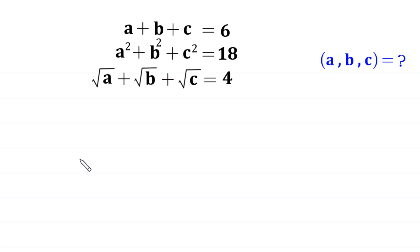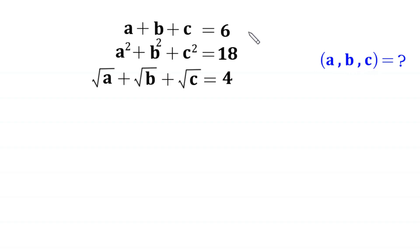Hello everyone. Welcome to solving this very nice system of equations: a plus b plus c is equal to 6, a squared plus b squared plus c squared is equal to 18, and root a plus root b plus root c is equal to 4. Our job is to find all possible values of a, b, and c. Let's call these equation 1, equation 2, and equation 3.